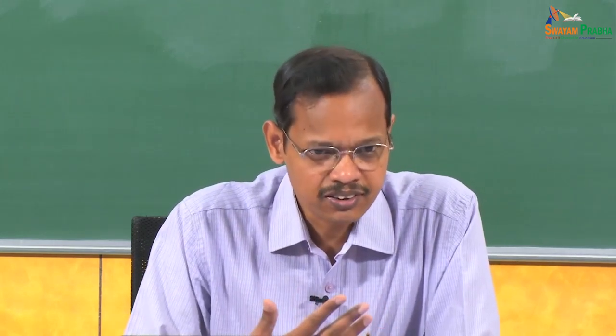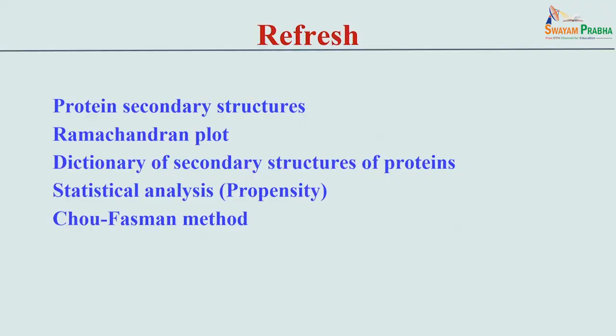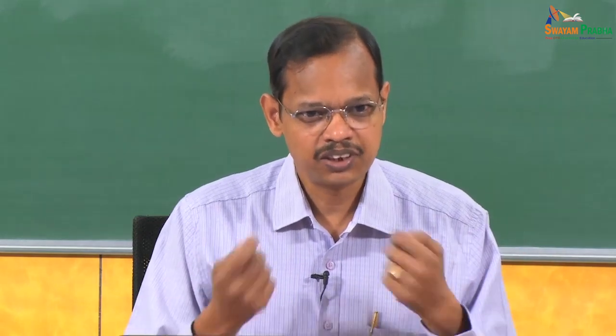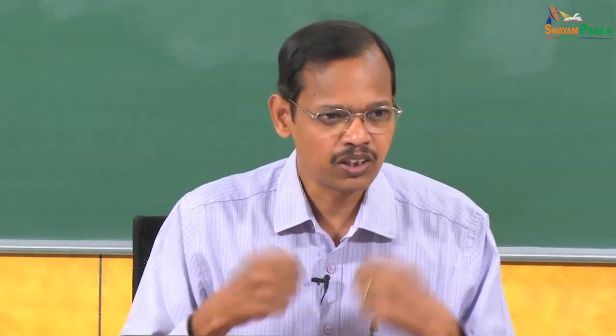If we know protein structures, based on hydrogen bonding patterns, Kabsch and Sander developed the DSSP algorithm to assign secondary structures to each residue. If we have experimental data, we can utilize that information to develop different models for predicting secondary structures.